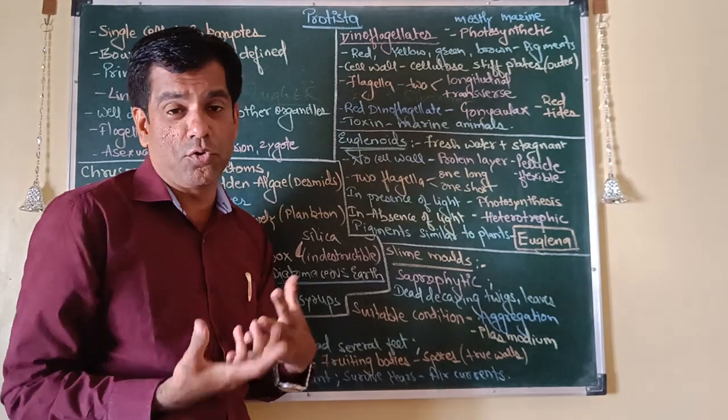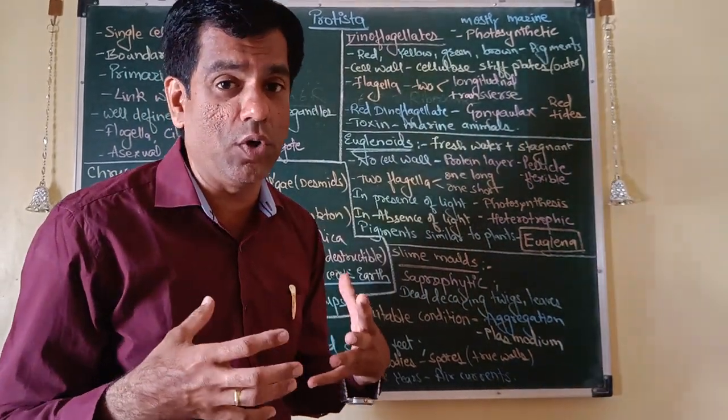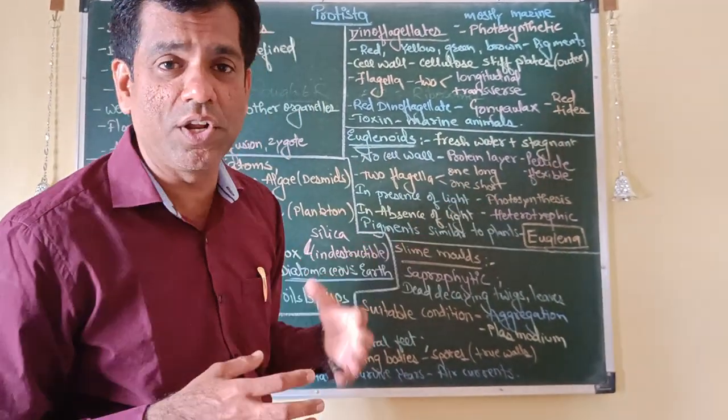Their pigments when they are photosynthesizing are similar to higher plants. Example is your Euglena.